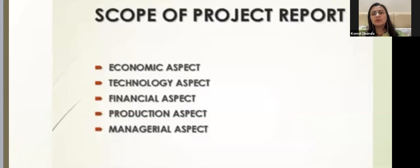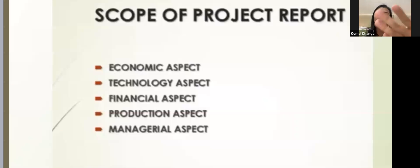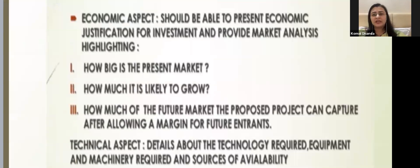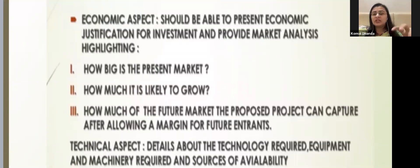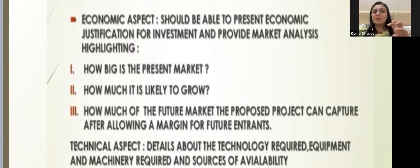If we talk about the scope of a project report, it consists of the economic aspect, technology aspect, financial aspect, production aspect, and the managerial aspect. In the economic aspect, it tells you what is the market you are trying to enter, how big the market is, what is the growth rate, what is your market share, what will the situation be in the future, and in case competitors come, how it will impact your status and how your position will change.